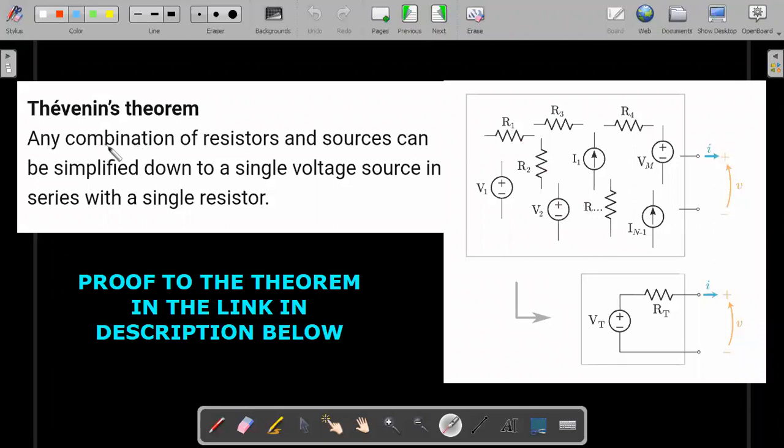Thevenin's theorem is going to be applicable in even higher level circuits like AC circuits also. So what we are going to deal with for this particular physics challenge is a special case in which we are going to deal with only DC circuits and resistors and cells. It talks about how any combination of resistors and sources (voltage sources or current sources) can be simplified down to a single voltage source in series with a single resistor. So this is the statement of the theorem.